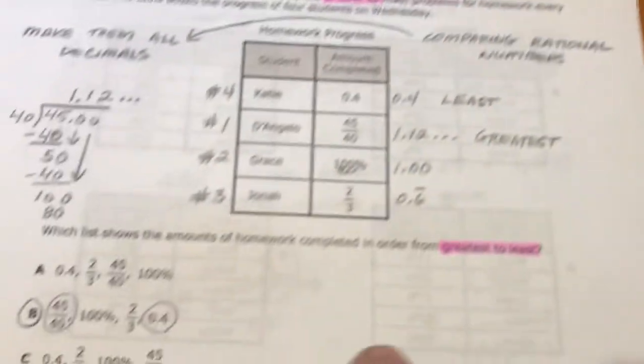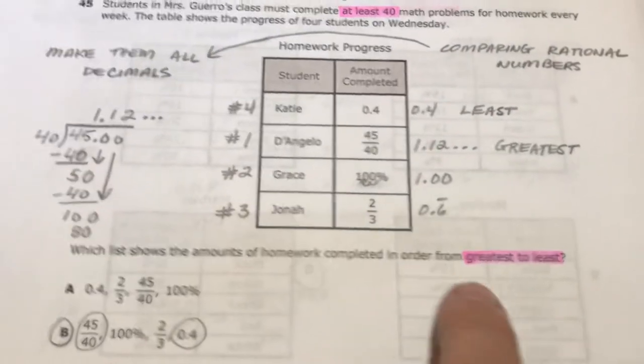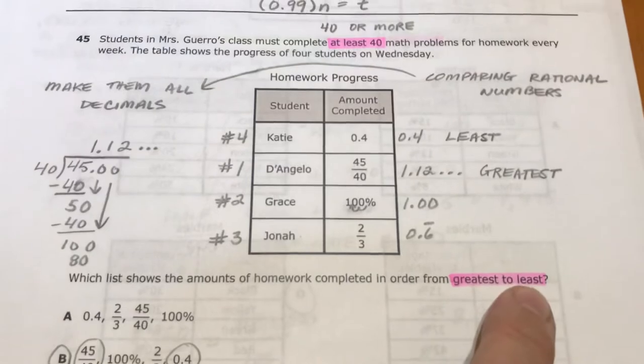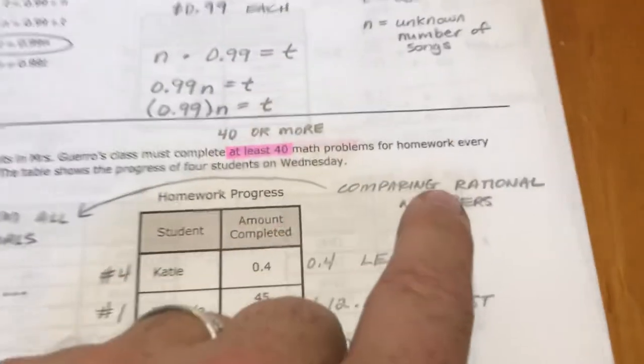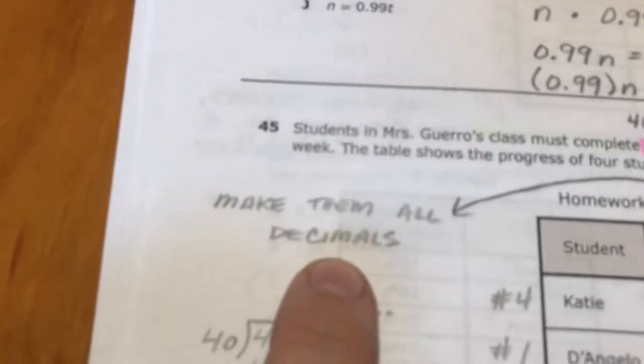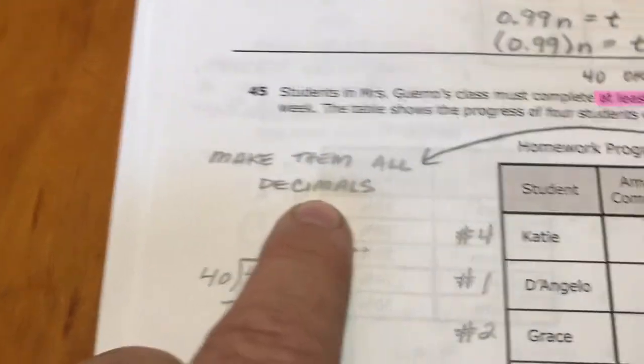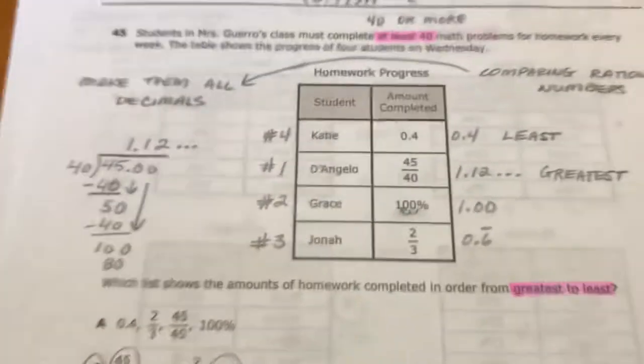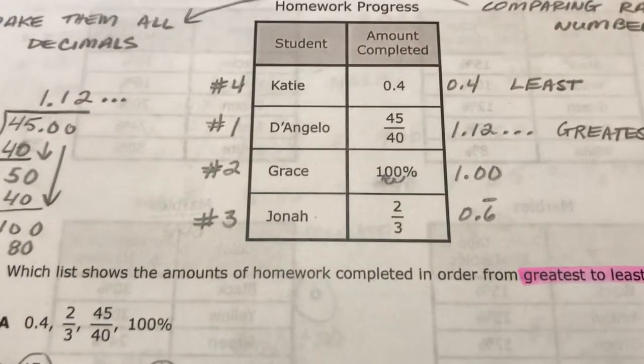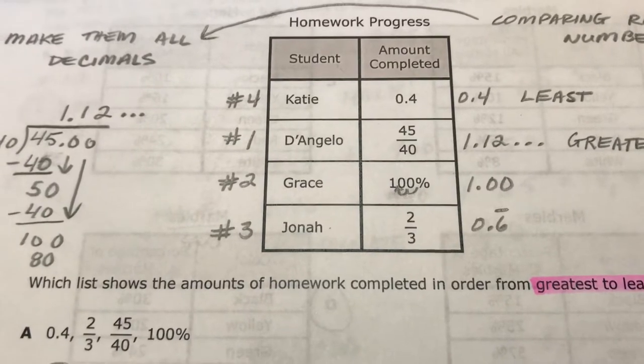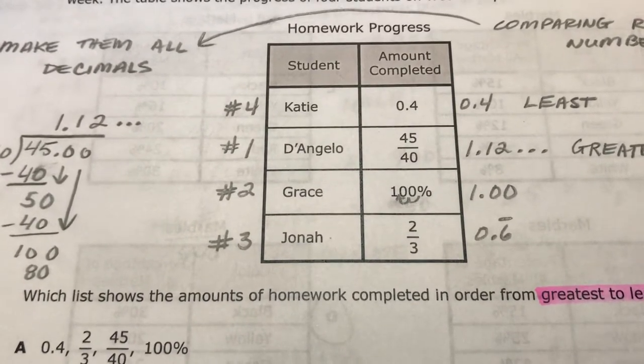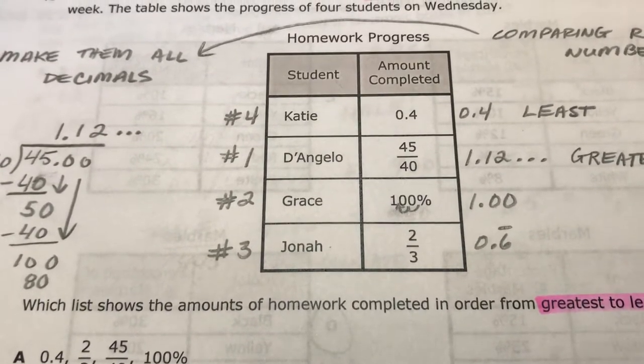So what you're trying to do is order these from the biggest one to the smallest one, greatest to least. What you have to do in order to compare them is you have to make them all decimals first because that's the easiest thing to do. You can make them all percents if you want to, but that's going to be probably a little bit harder. And don't make them all fractions because that will take forever.